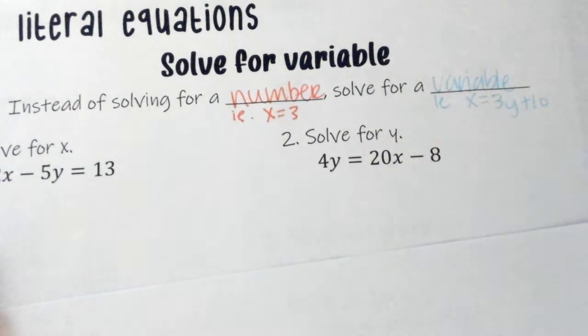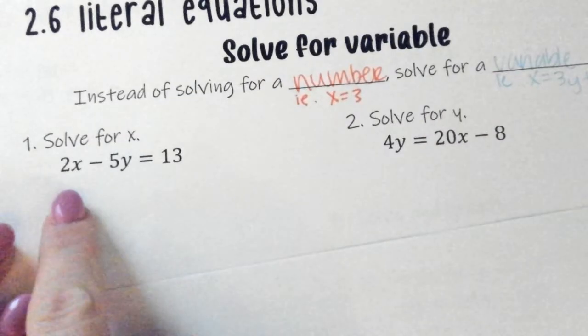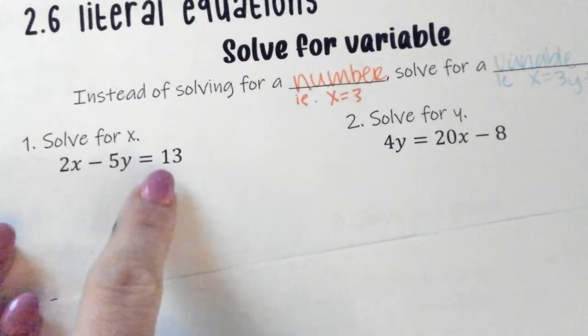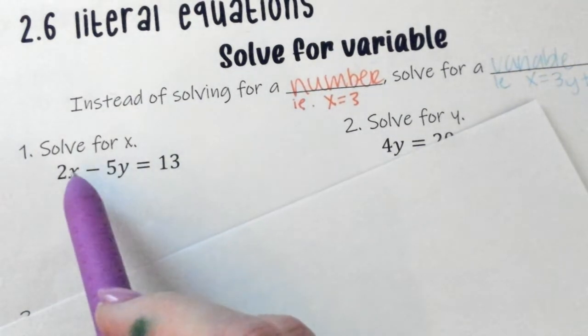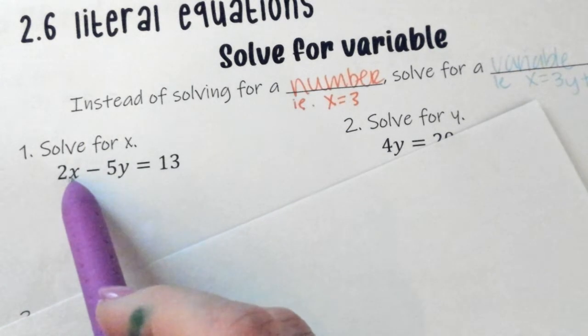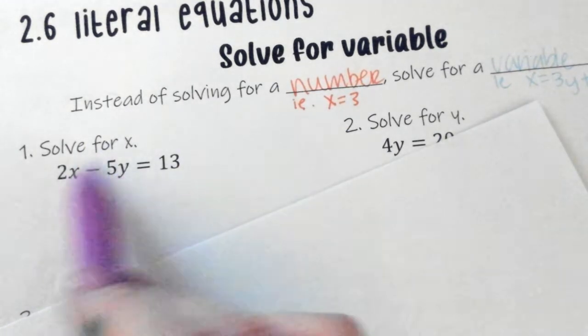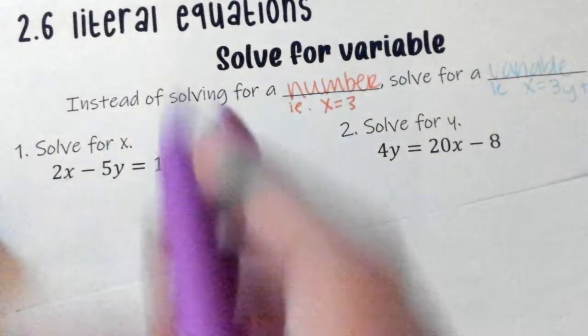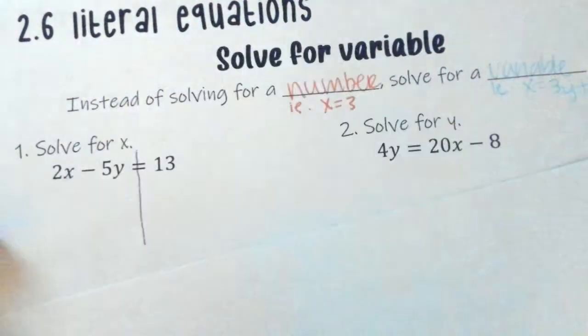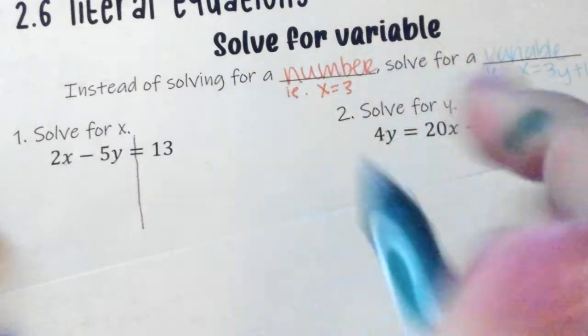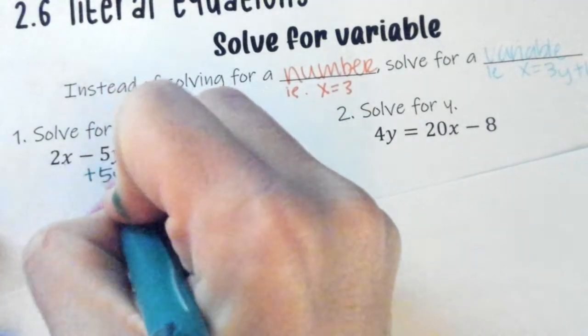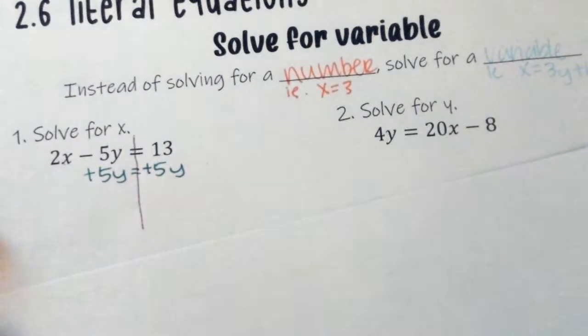You can see our examples here. We've got solve for x. We've got 2x minus 5y equals 13. I'm still going to be doing the same kind of things I was doing when I was trying to get x by itself and get a number. I just need all this stuff to go on this side of the equal sign. Same steps. I'm going to draw my line. I first have to deal with what's added or subtracted to it, and what's added and subtracted to this is this minus 5y. Opposite operation says plus 5y on both sides.